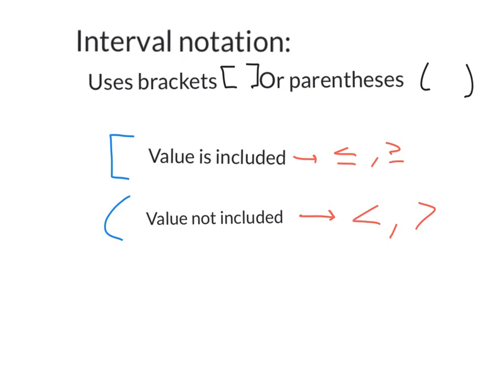So how this works is you are using some form of brackets and or parentheses and you have a lower value, there's a lower bound to your domain or range, comma, upper bound, and then you close up the interval.